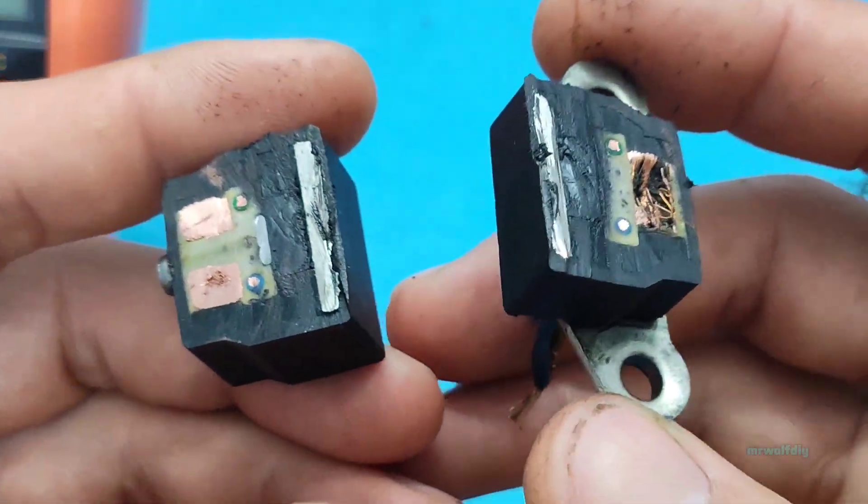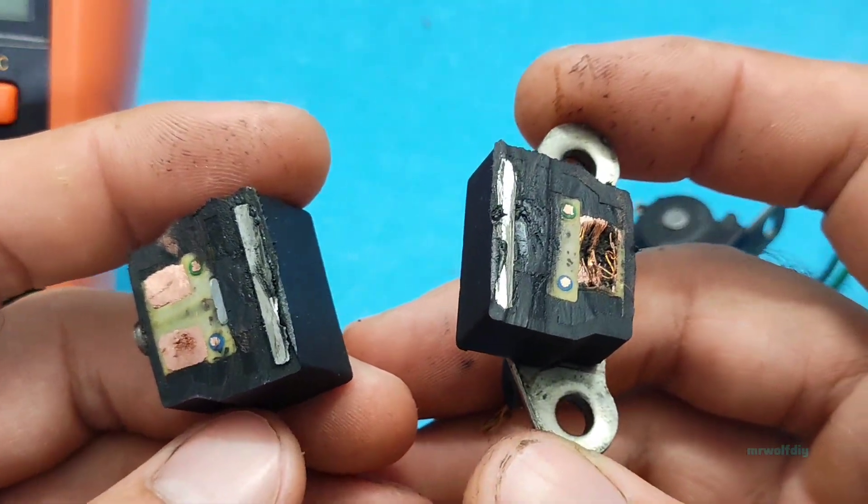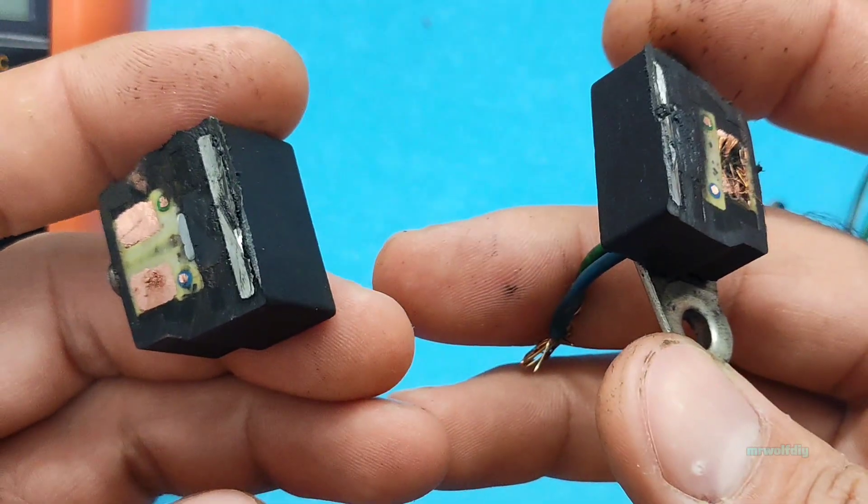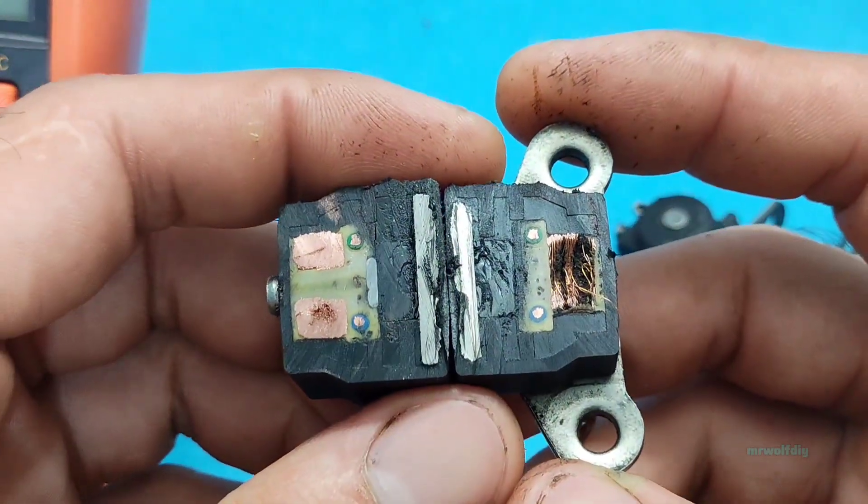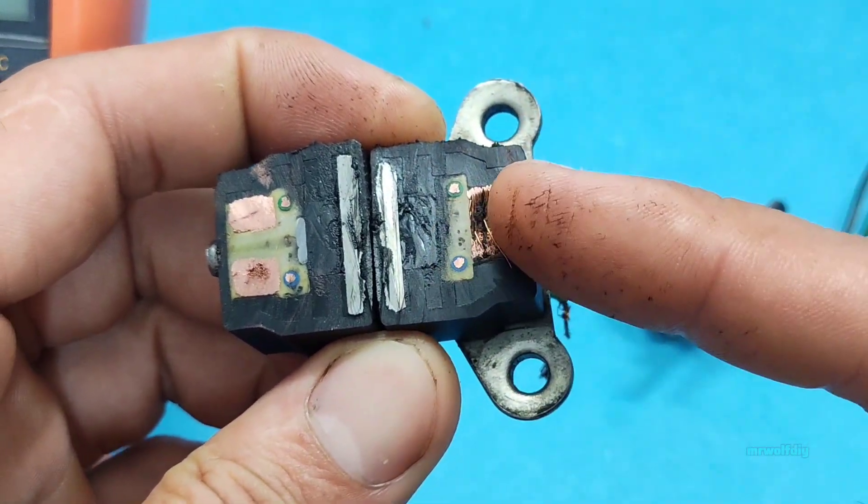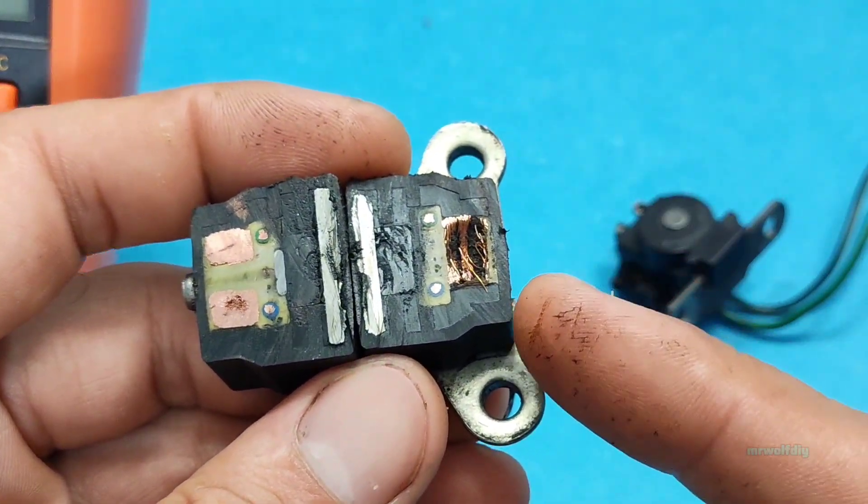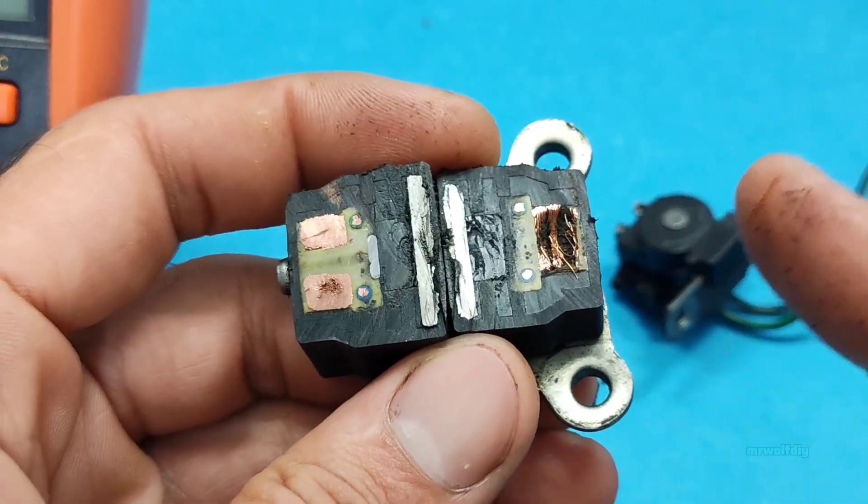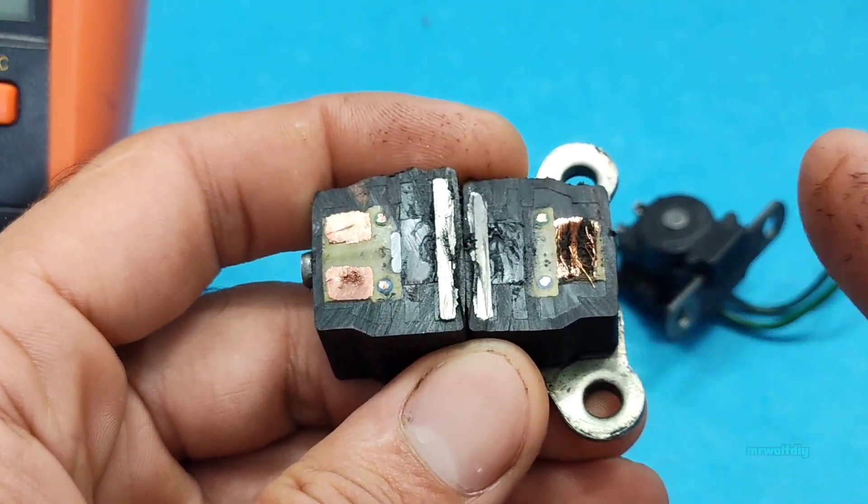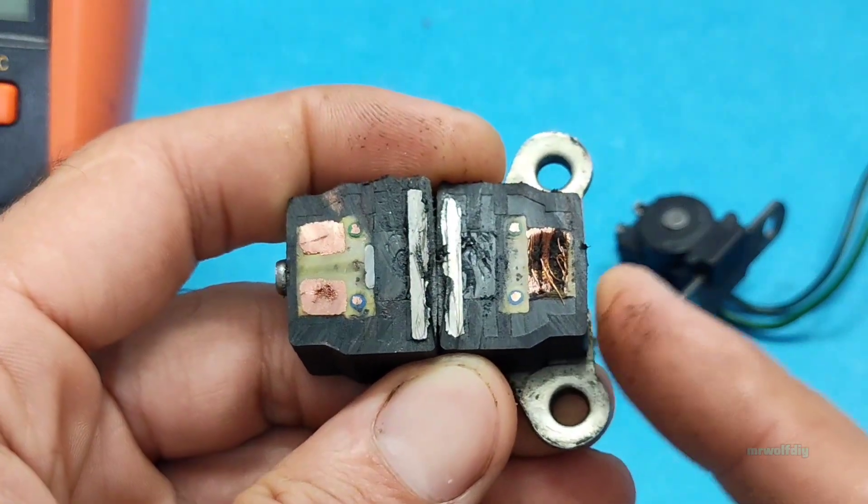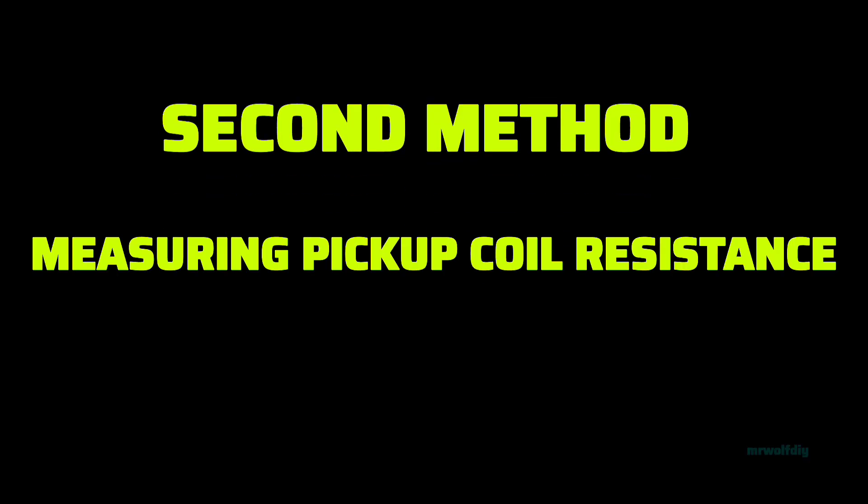We know the pickup is a type of coil, so it has a resistance. By measuring the pickup coil resistance, you can tell if it's healthy or not. But there's one important point you need to pay attention to. Let's show you. Second method, measuring the pickup resistance.